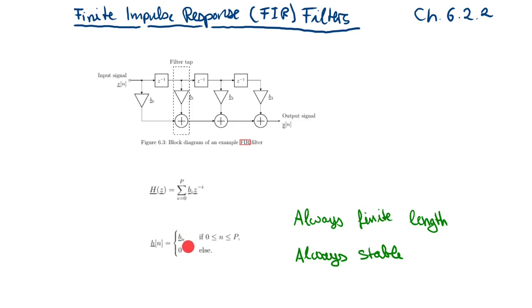And what remains would then be the formula of the finite impulse response filter. But here you see a special notation. You see directly that the impulse response is just composed of the coefficients here of the filter taps. So there's a direct connection between the filter tap coefficients and the impulse response.